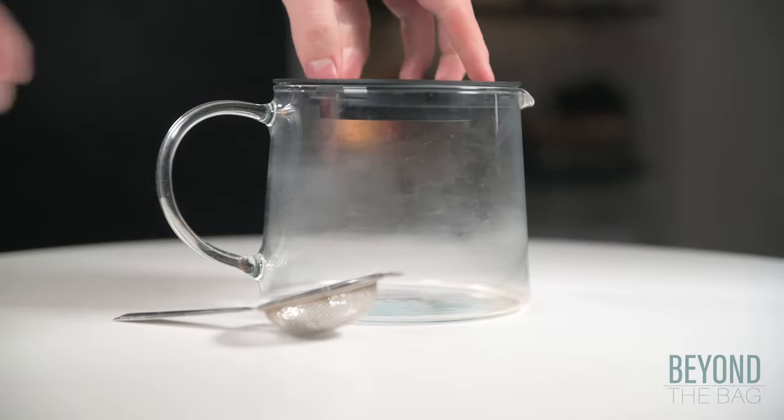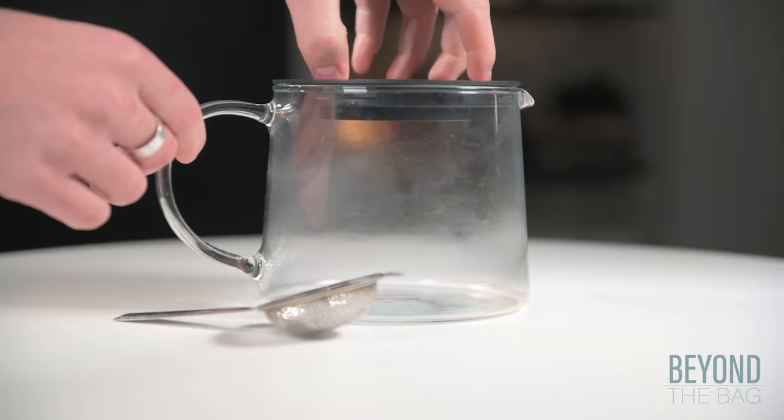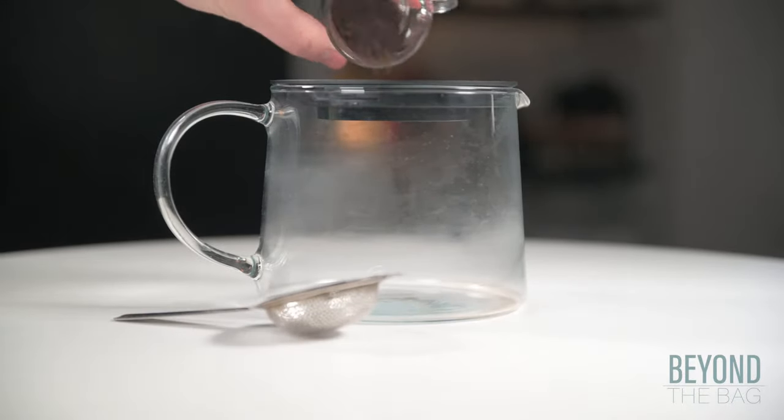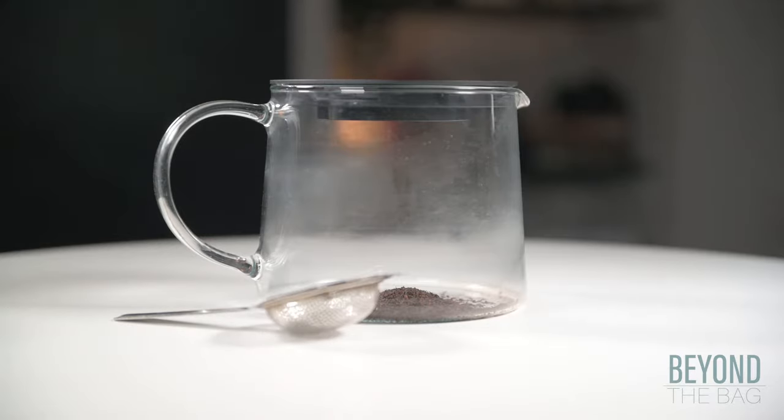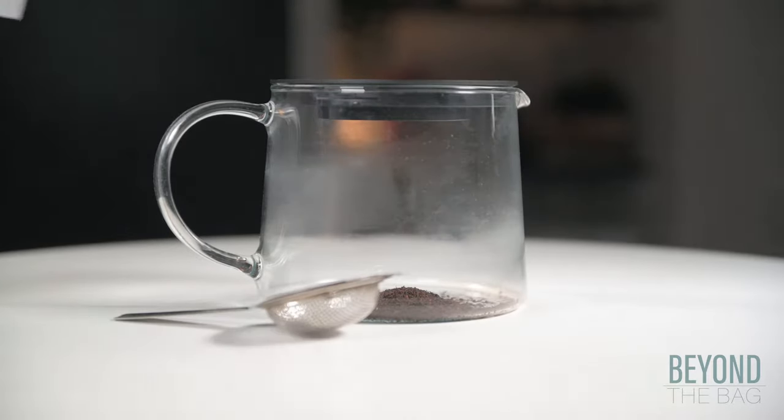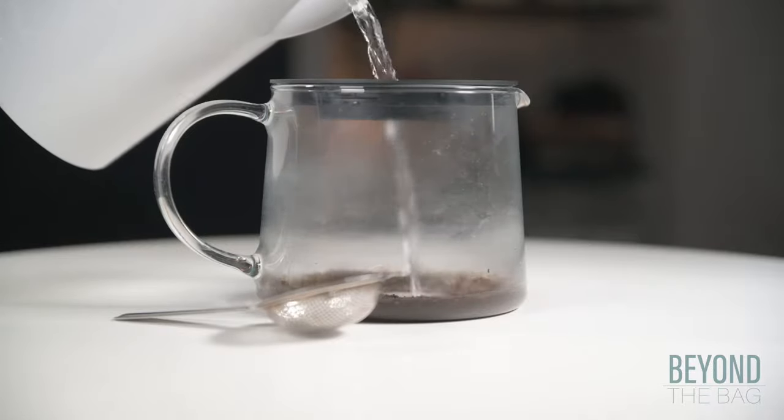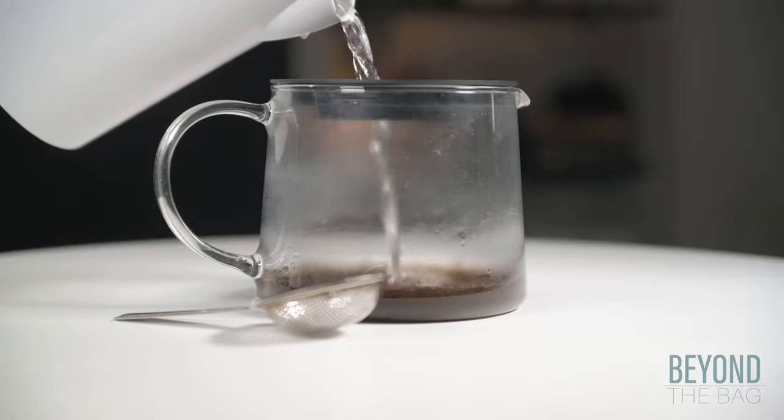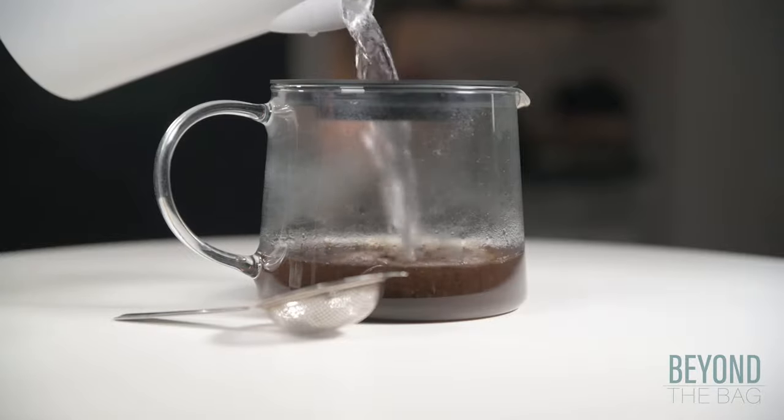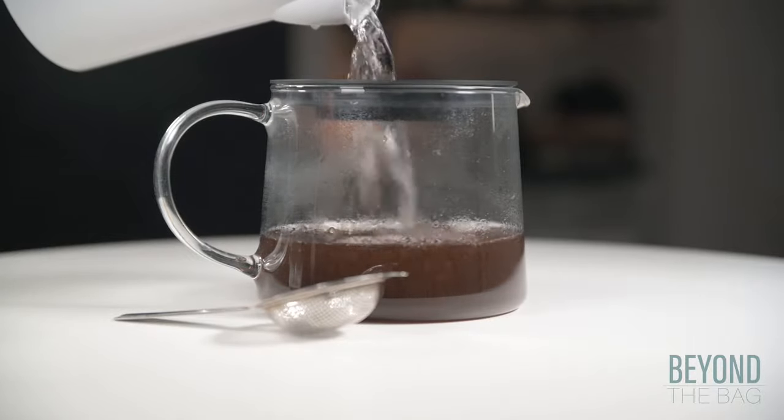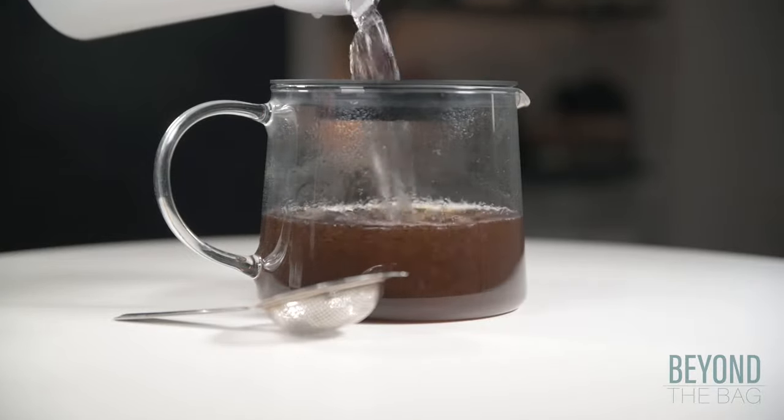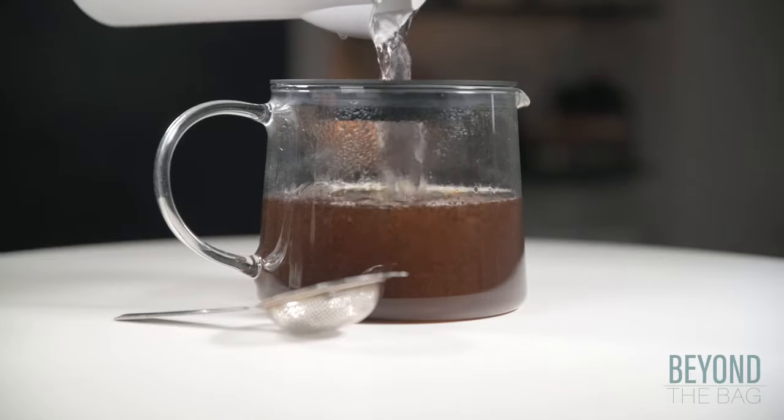This is also quite easy to use. Simply pour the tea straight into the teapot with no containment device and follow up with some hot water. Again, we are going to let this steep for the recommended amount of time. As you can see, the tea leaves are swirling around quite freely.